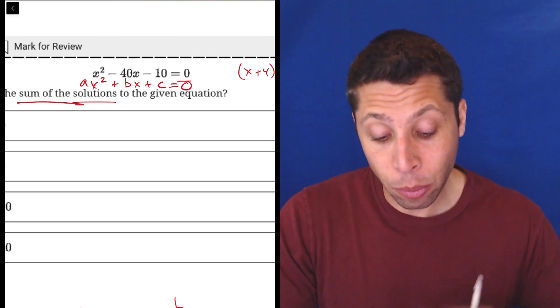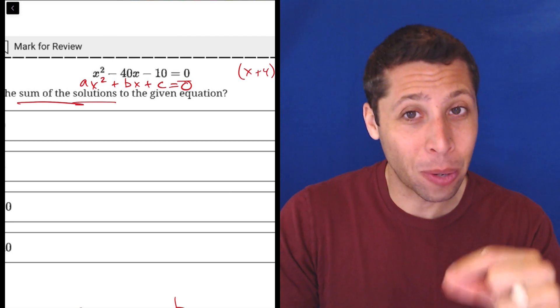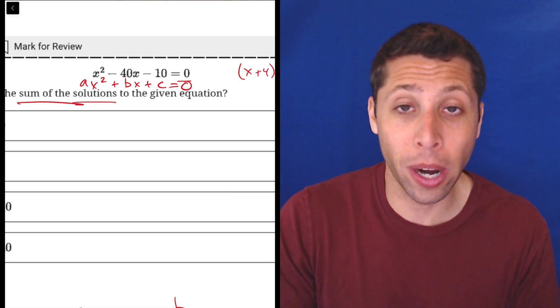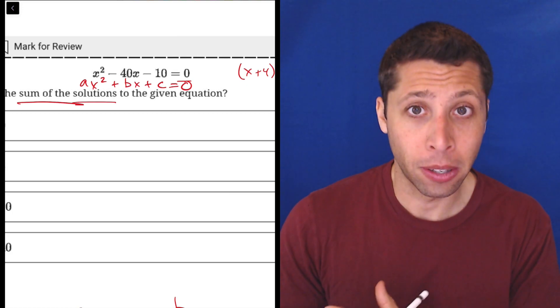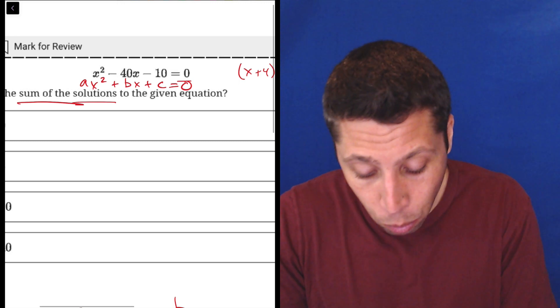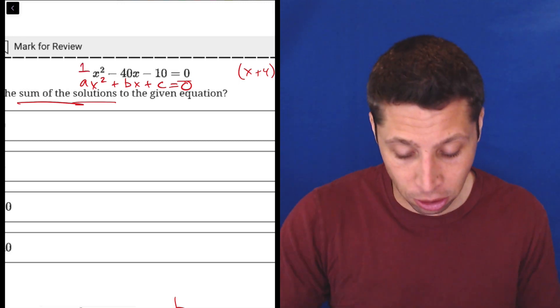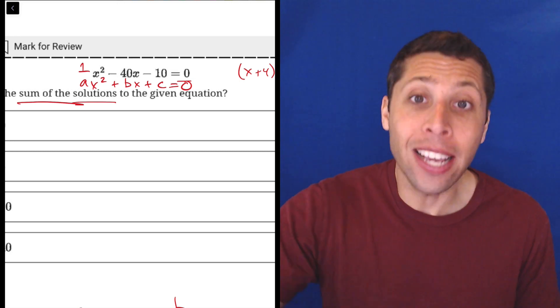So, the a is whatever number is in front of the x squared. And now, I know when we have this equation here, we don't see an a. There is no number in front of that x squared. But hopefully, by now, with algebra, you remember that when there's no number in front of a variable, that number is one. We wouldn't write it, but it's there. And so, we might want to write it just so we can see it better. This is one x squared. So, my a is one.